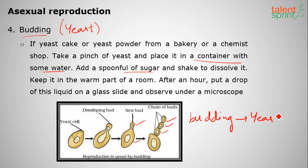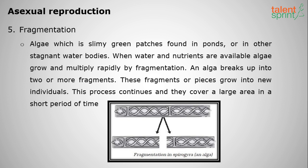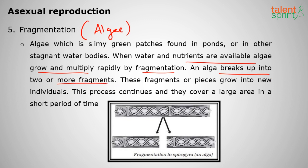The next method is fragmentation, which means breaking down. It is seen in algae. When water and nutrients are available, algae grow and multiply rapidly by fragmentation — breaking up into two or more fragments. Algae is the green-colored material present on the top layer of water bodies like rivers, ponds, and lakes, and it multiplies rapidly when conditions are convenient.